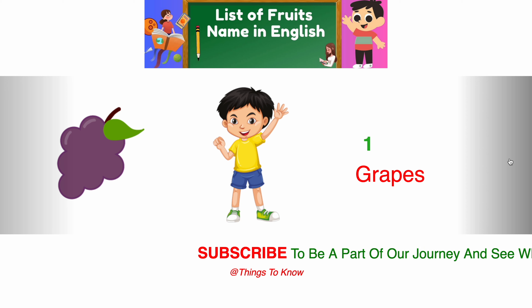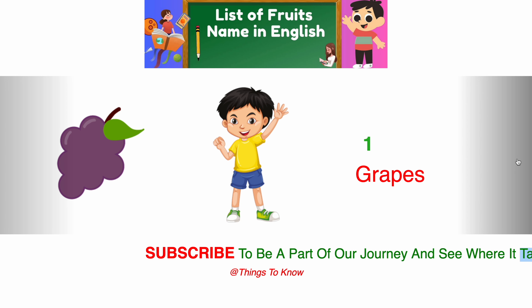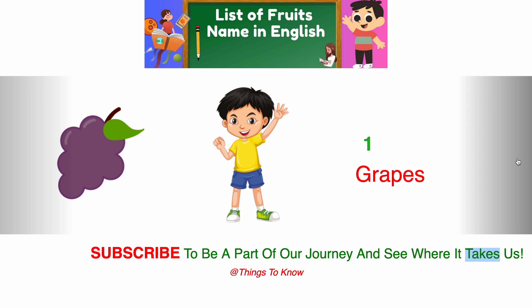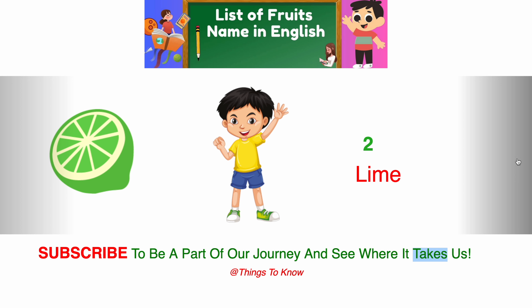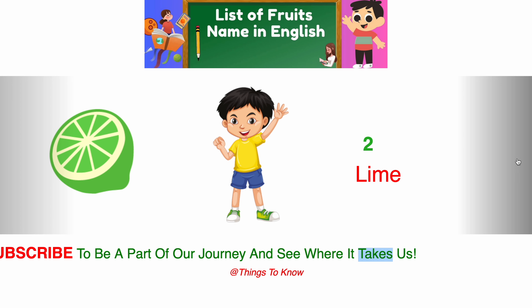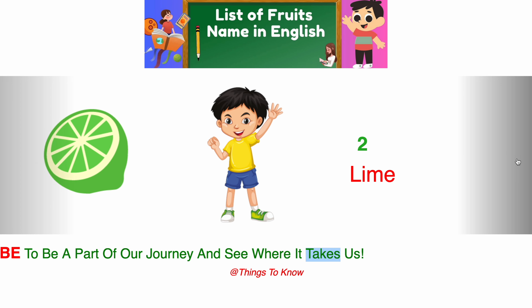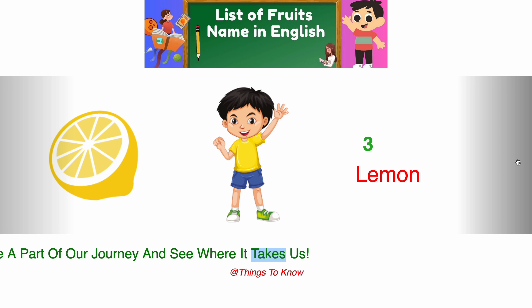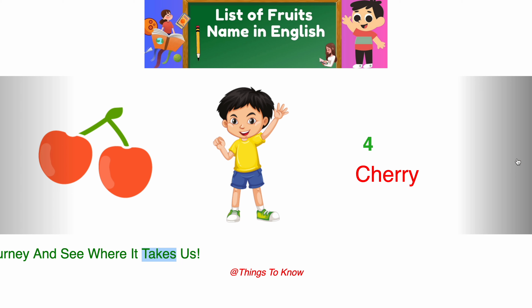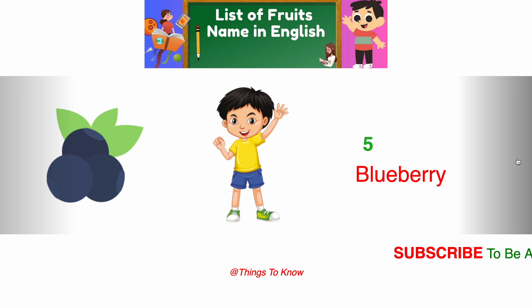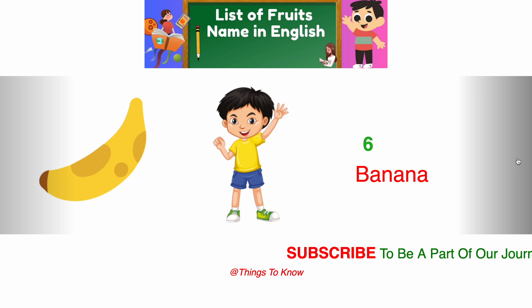List of fruit names in English. 1. Grapes. 2. Lime. 3. Lemon. 4. Cherry. 5. Blueberry. 6. Banana.